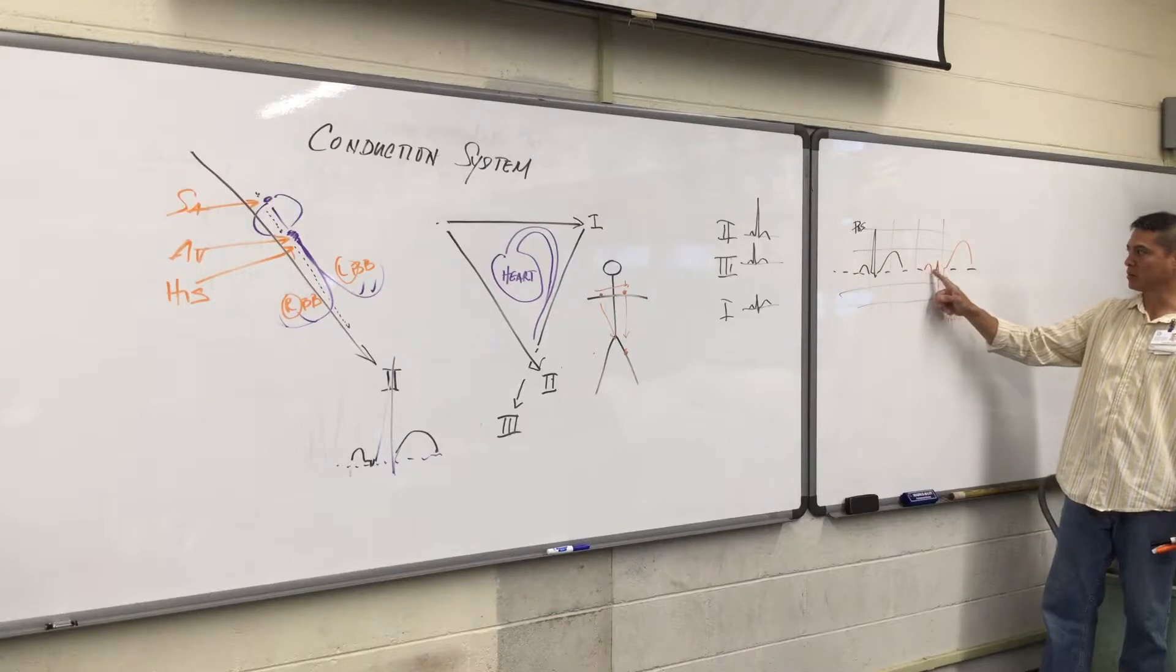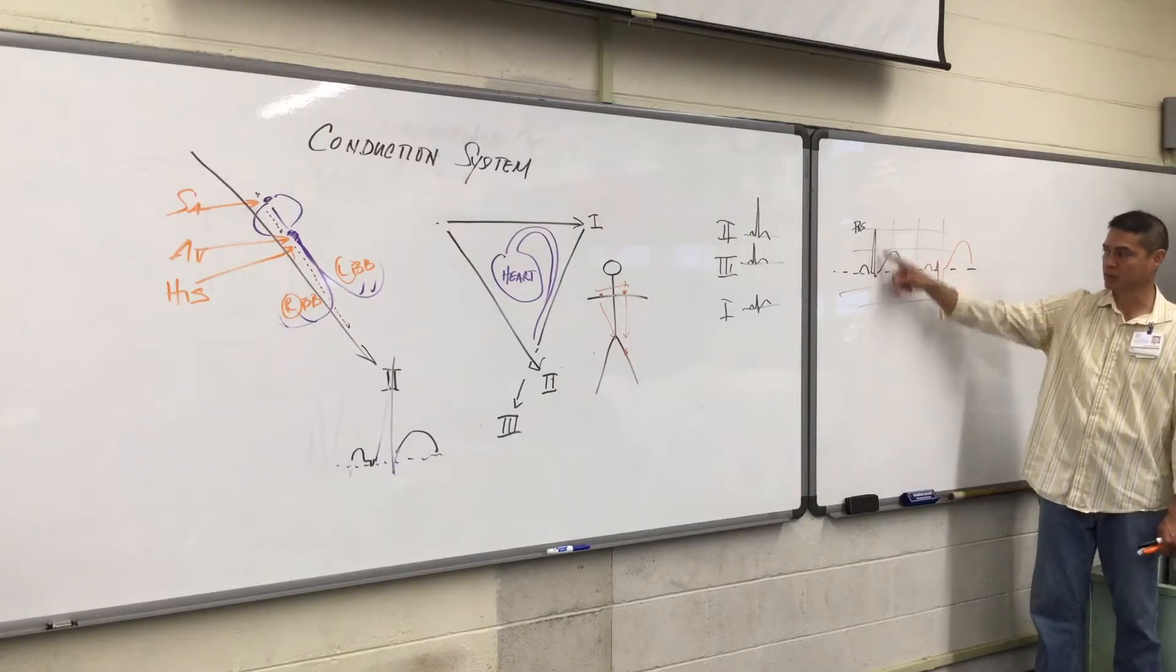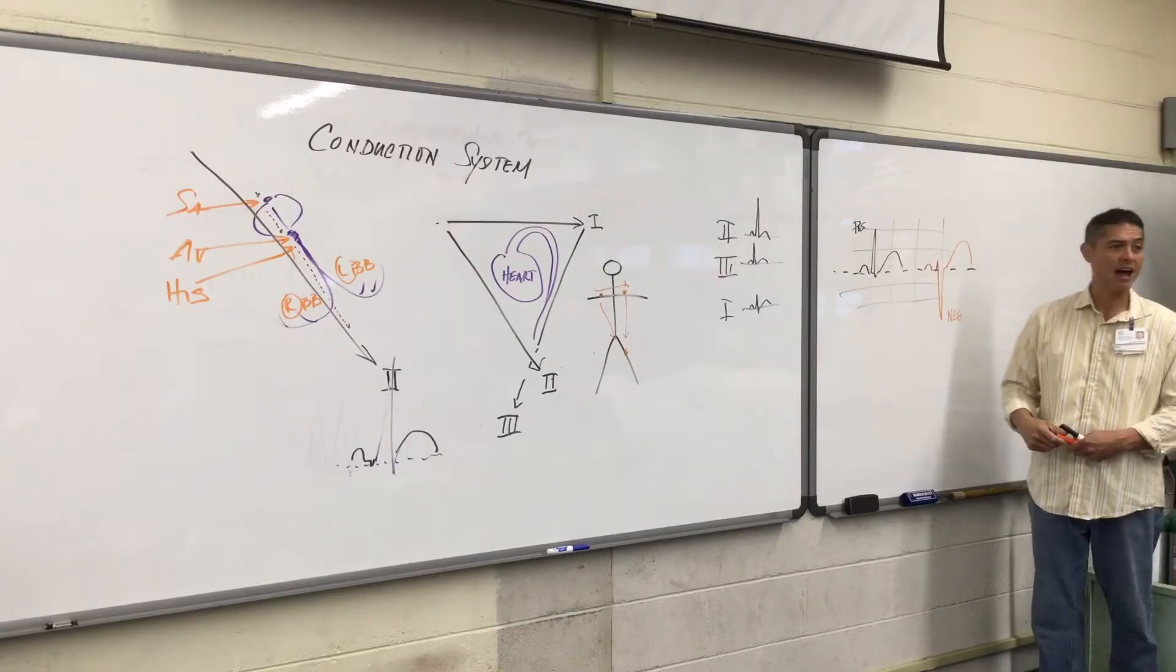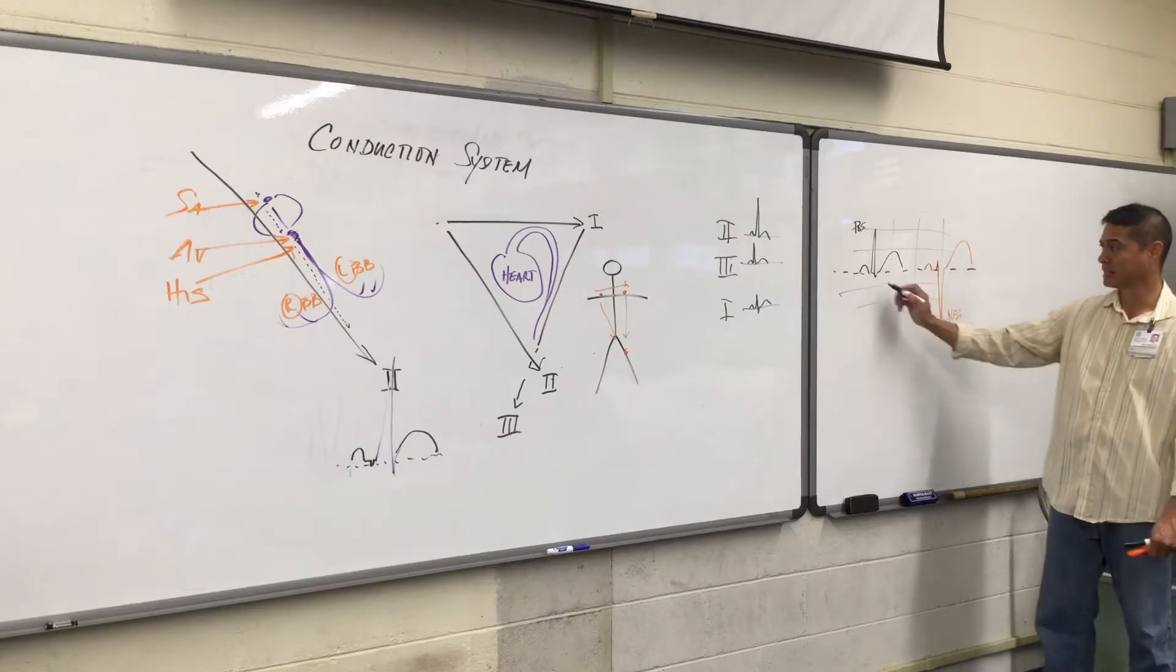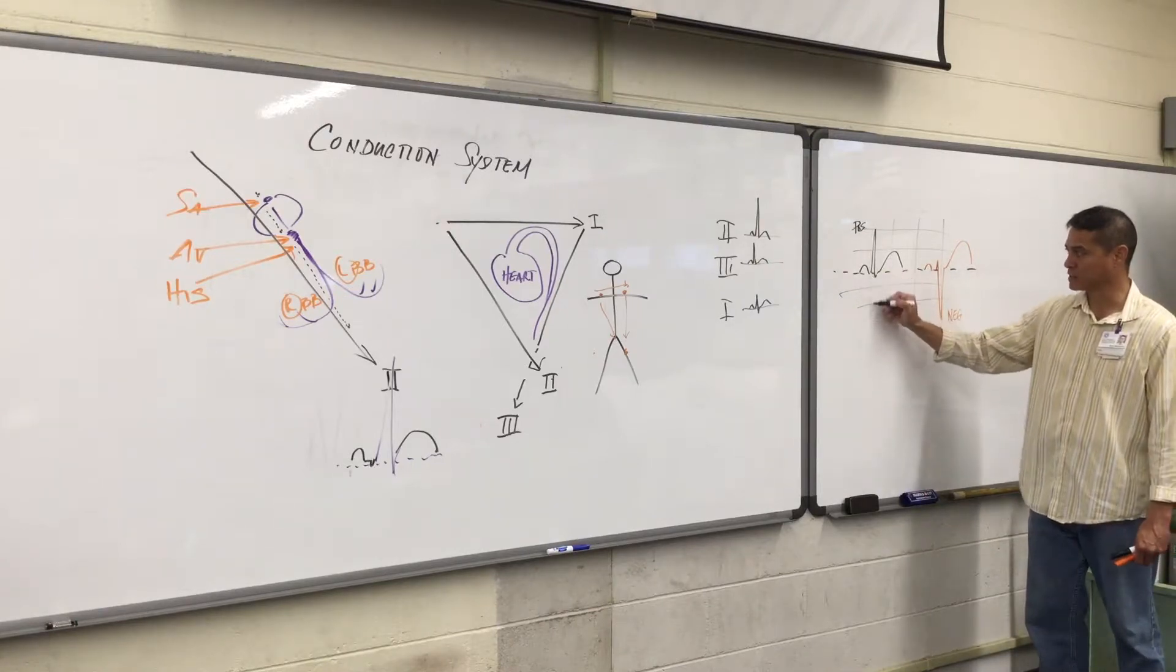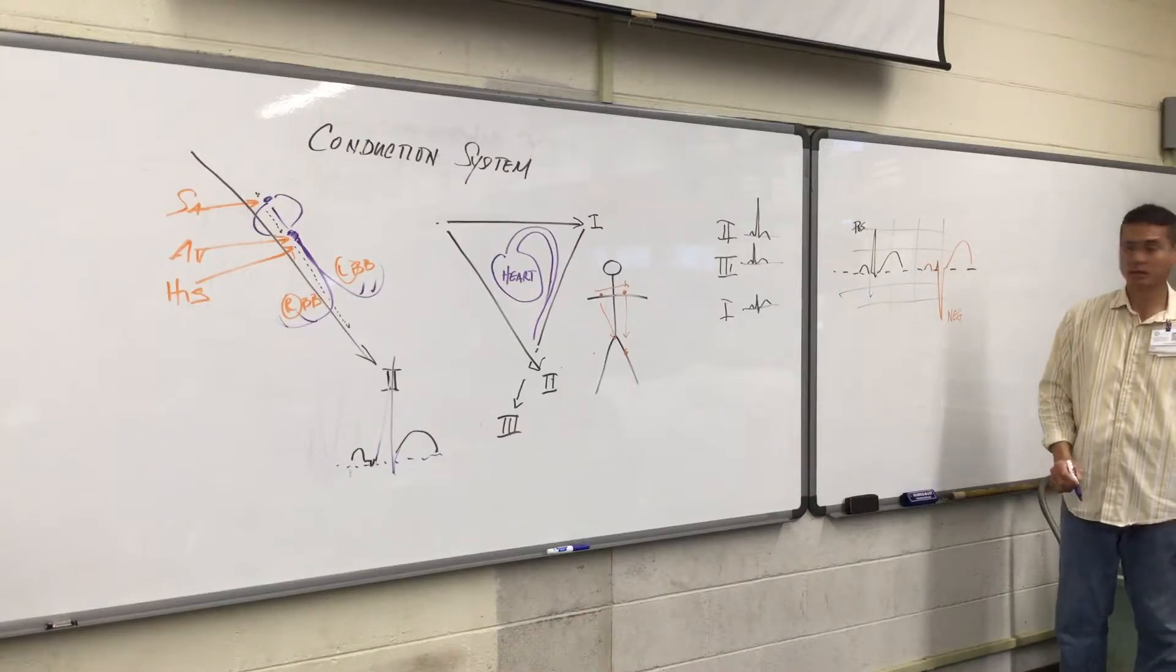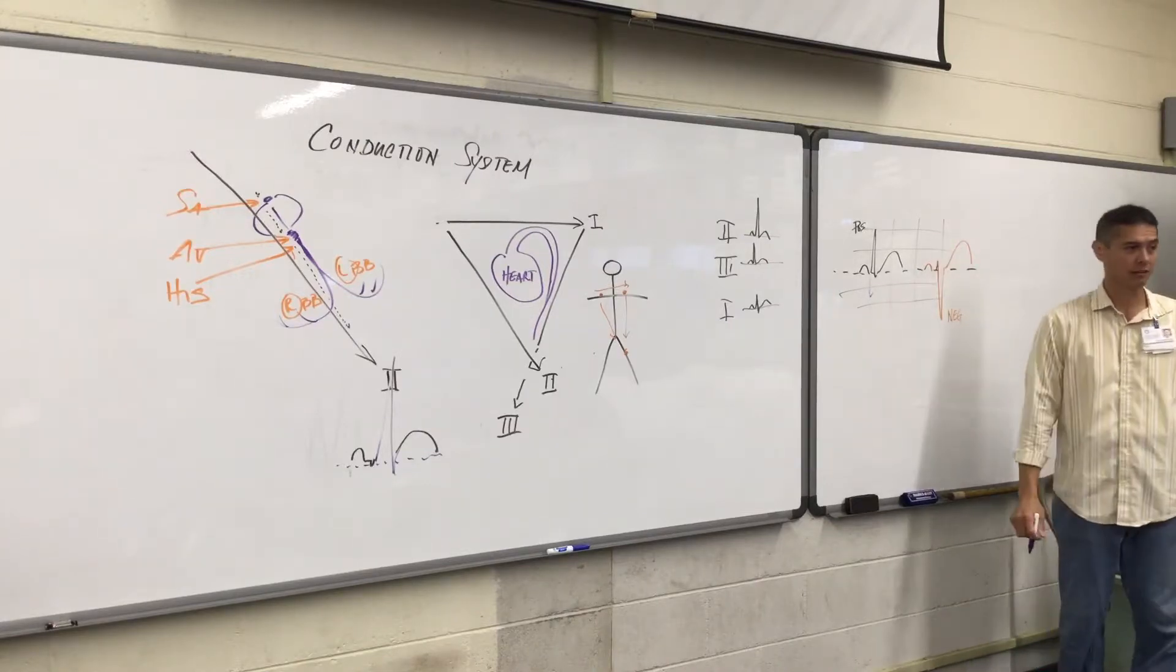Let's take a look. Here we have mostly a positive QRS complex, so we don't have a Q wave in it. Because the first negative deflection would be a Q wave, which we don't have. We mostly have what type of wave here?